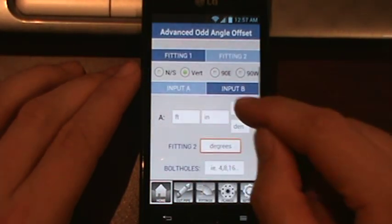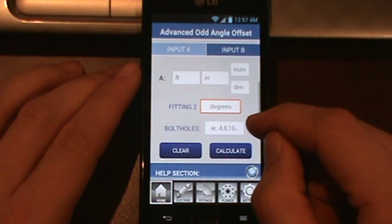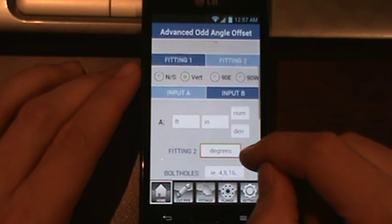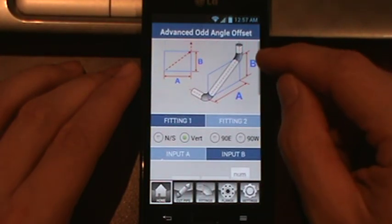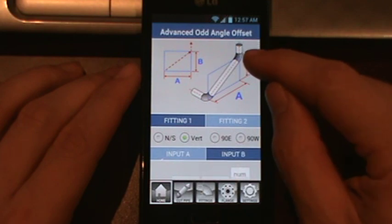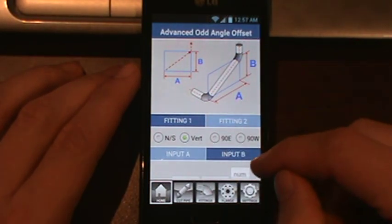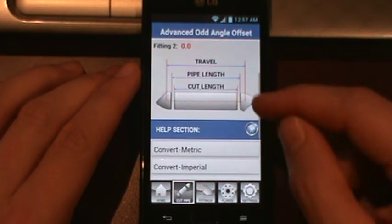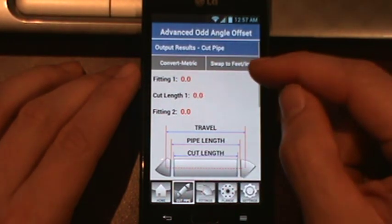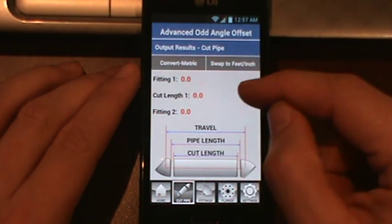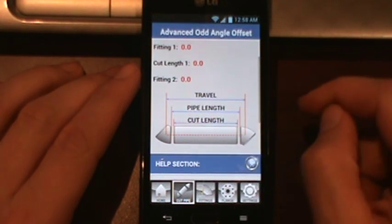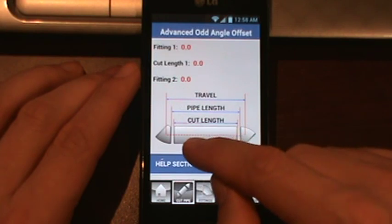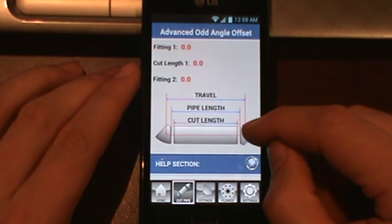You scroll down, you have input values for A and B. Fitting 2. A lot of this will change depending on what your settings are. It shows fitting 2 here and that's to determine what the actual angle is if you know what it is. Fitting 1 is a 90, so you do not have to do anything with that. Bolt holes if you need flanges. The cut pipe section will give you the angle for fitting 1, the cut length and fitting 2. There's also more detailed information here just to show you the travel and the offset, the cut length and then the pipe length and then the cut length based on your root gap.